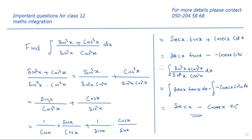Now sin x divided by cos²x can be written as (1/cos x) · (sin x/cos x), which equals sec x · tan x. Plus the second term, cos x divided by sin²x, is written as (1/sin x) · (cos x/sin x), which equals cosec x · cot x.